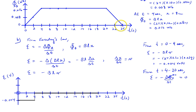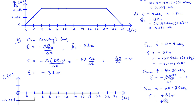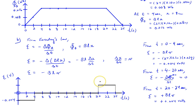Finally, from 20 seconds to 24 seconds, as the loop leaves the field, the induced EMF is positive BLv, giving positive 0.004 volts. We draw a horizontal line above the x-axis. As the loop completely emerges from the field region, the EMF drops back to 0. That is the final picture of the induced EMF as a function of time.